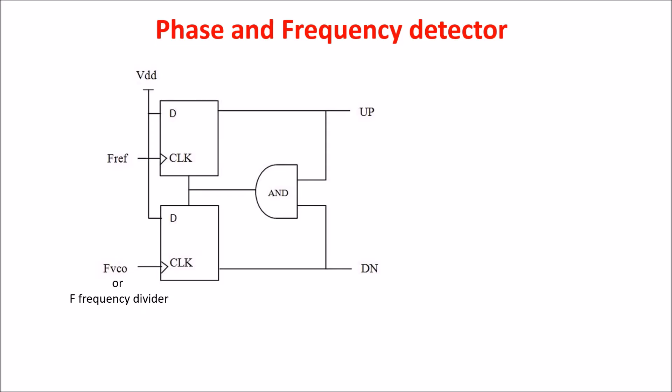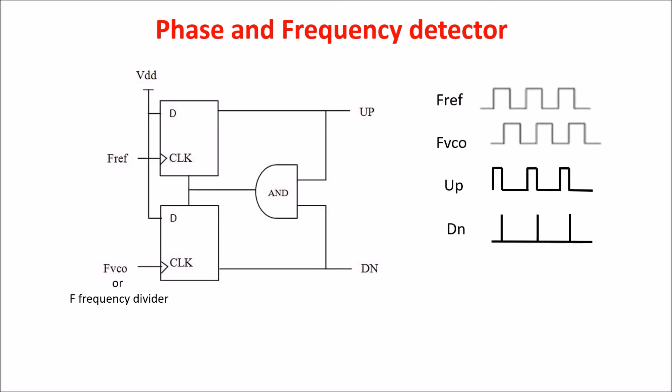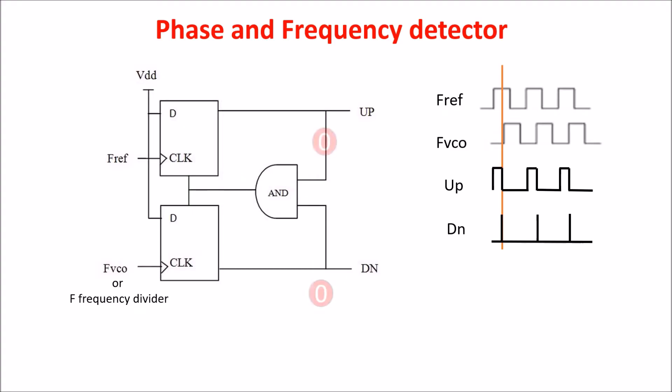Here is the conventional digital phase and frequency detector. It is built with two edge-triggered D flip-flops with an asynchronous clear input. The important thing to remember is that this kind of flip-flop allows the data input to pass through to the output only on the rising edge of the signal. The data inputs of the flip-flops are tied to VDD, or logic one. Let's say the reference frequency FRF leads and the frequency from the VCO lags behind. On the rising edge of FRF, the up signal goes high and remains high until FVCO goes high, giving a clear pulse to the D flip-flop, bringing the up signal back down.